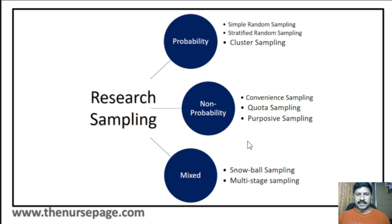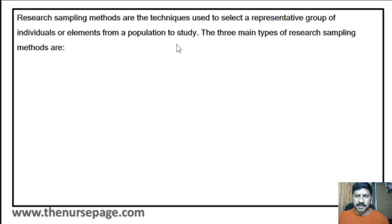We will move to the definitions. Research sampling methods are the technique used to select a representative group of individuals or elements from a population to study. Sampling method means it is a process of selecting from a large population to a representative group, so that representative group will represent the total population. That process is known as sampling. Research sampling is divided into three types; the first one is probability sampling, which is a type of sampling in which each element of a population has a known and equal chance of being selected for the study.